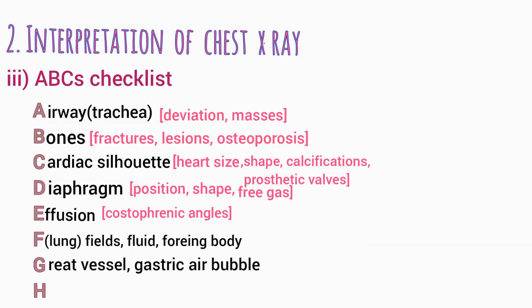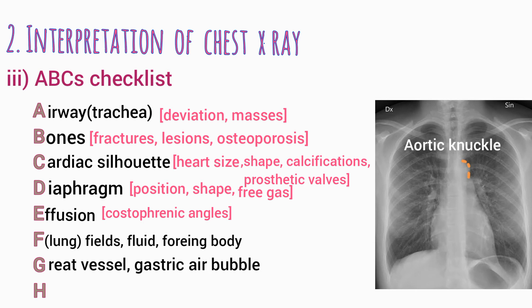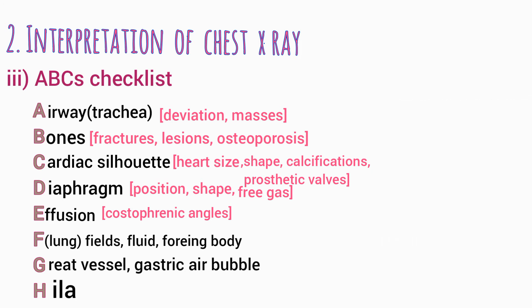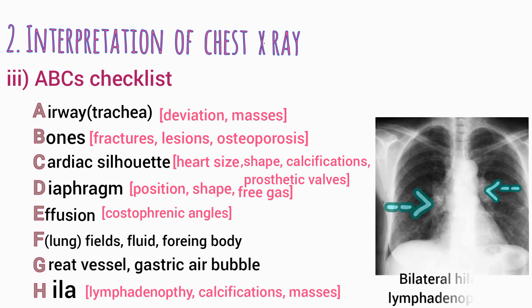G is for great vessels and gastric air bubble — check the aortic size and shape; the aortic knuckle should be clearly seen, and gastric air bubble should also be visible. H is for hila — evaluate each hilum for lymphadenopathy, calcifications, and masses.